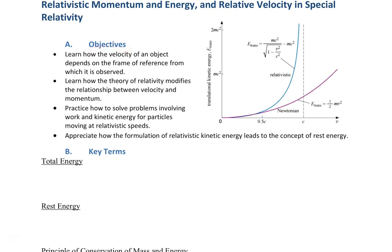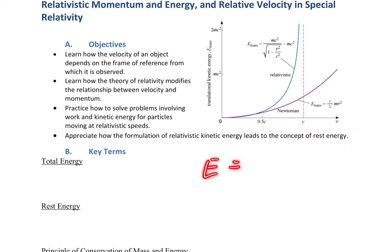Here are our objectives up front. We want to learn how the velocity of an object depends on the frame of reference from which it is observed — that's Galilean relativity. We also want to learn how the theory of relativity modifies the relationship between velocity and momentum. And we want to practice solving problems involving work and kinetic energy for particles moving at relativistic speeds, and appreciate how relativistic kinetic energy leads to the concept of rest energy and the famous equation E equals mc squared.